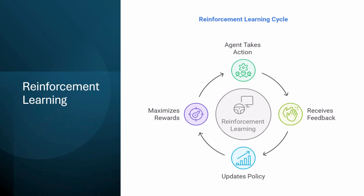Finally, we arrive at reinforcement learning. This type of learning is unique because it involves algorithms learning through interactions with their environment. Instead of being provided with labeled data, the algorithm learns by taking actions and receiving feedback in the form of rewards or penalties. Think of it like training a pet — when it performs a trick correctly, it gets a treat; when it misbehaves, it gets no treat or a negative consequence.